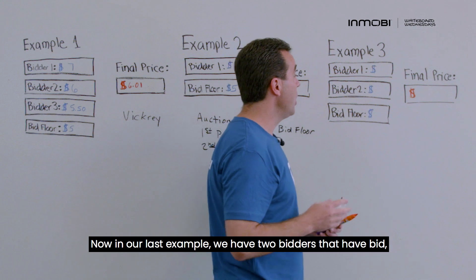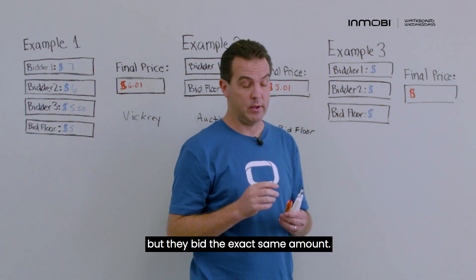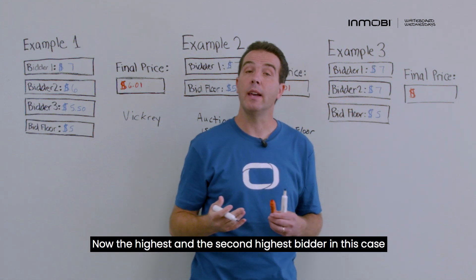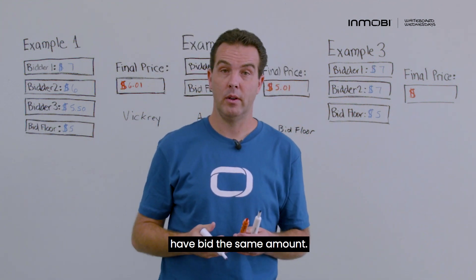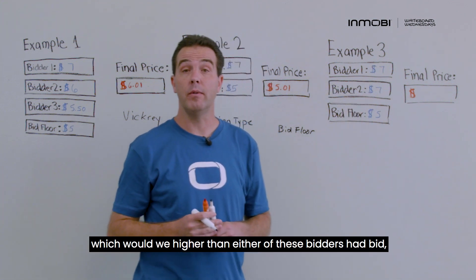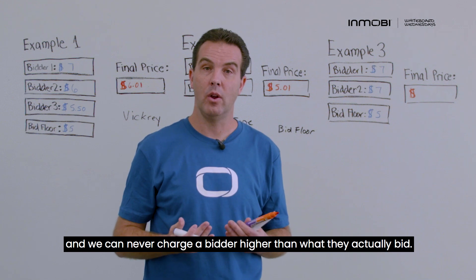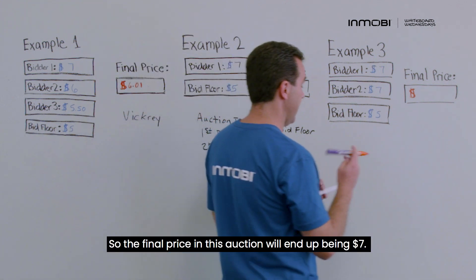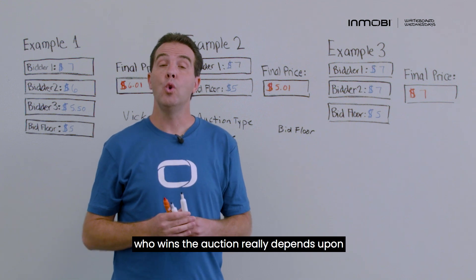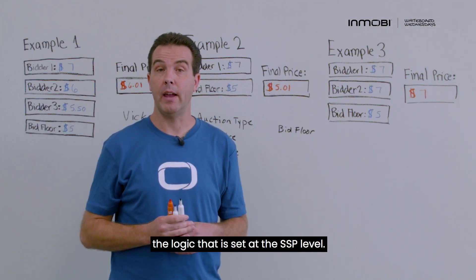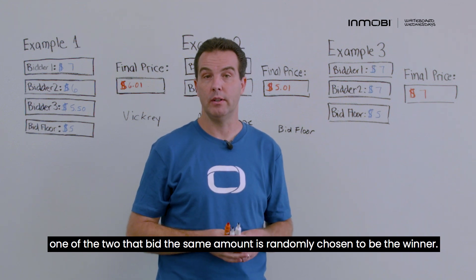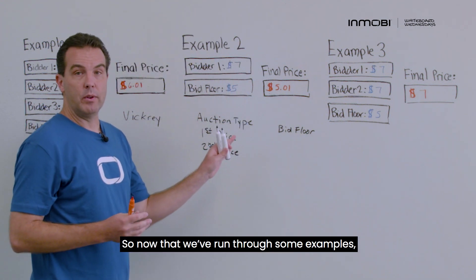In our last example, we have two bidders who bid the exact same amount — both bid seven dollars — with a bid floor of five dollars. The highest and second highest bidder have bid the same amount, so we cannot add one cent to the second highest bid because that would make it $7.01, which is higher than either bidder actually bid. We can never charge a bidder more than they bid, so the final price is seven dollars. In a tie like this, who wins depends on the SSP's logic, but typically one of the two is randomly chosen as the winner.